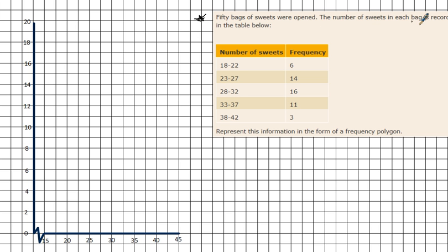We've got 50 bags of sweets were opened, the number of sweets in each bag is recorded in the table below. You might be asked to complete this table yourself or it might already be there for you. The difference with frequency polygons is that this data here is grouped data.